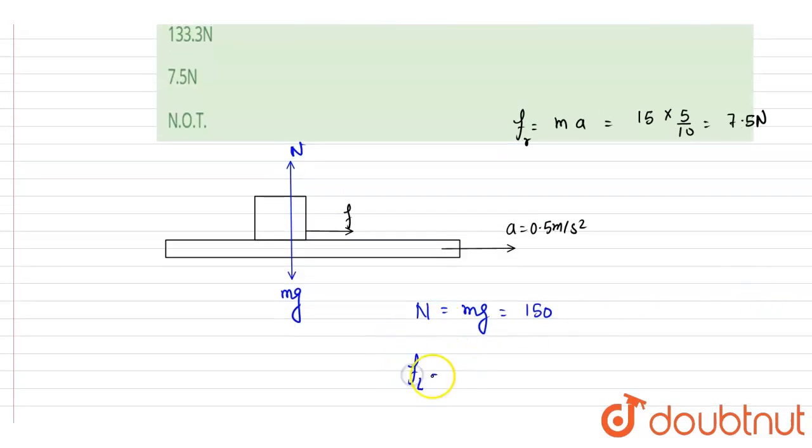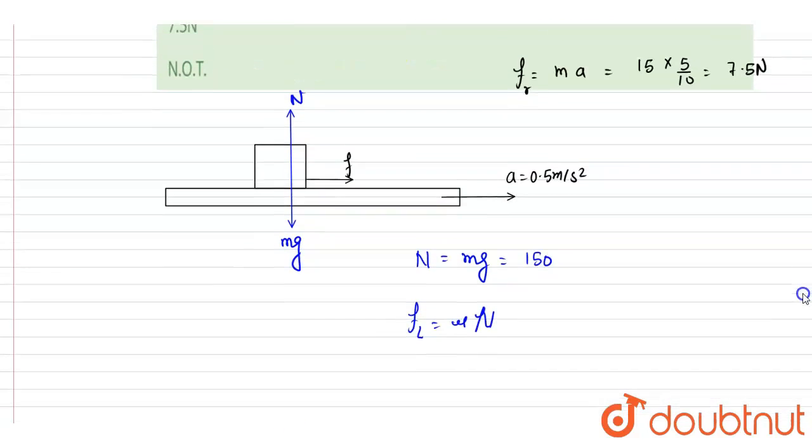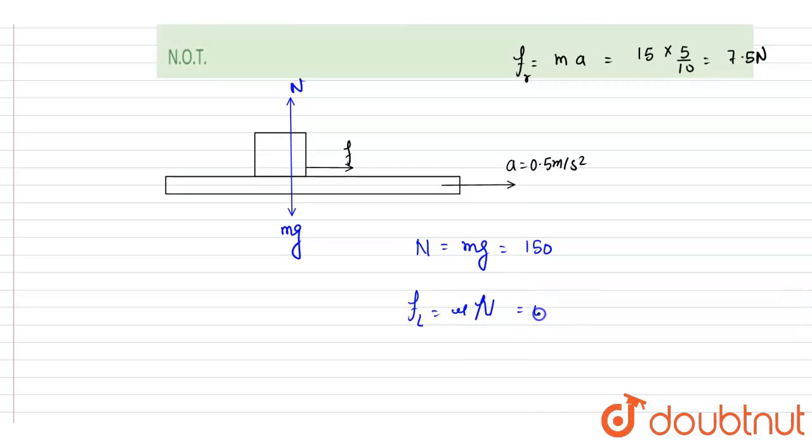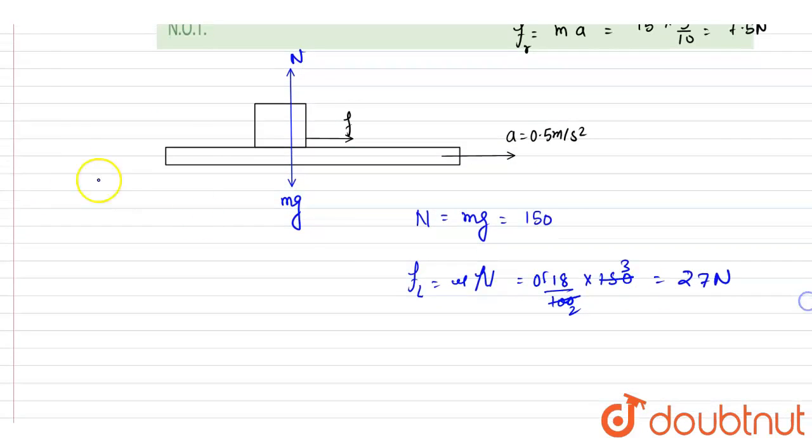So we will write down the limiting friction here is mu times N. So mu is given, it is 0.18. So we will write down 0.18 into 150, it is 27. So if you see, this will be 100, so this will be 2 and this will be 3, so it is 27. So you can check the requirement